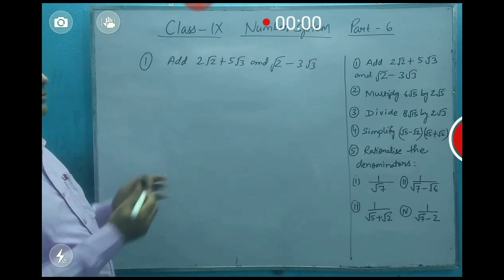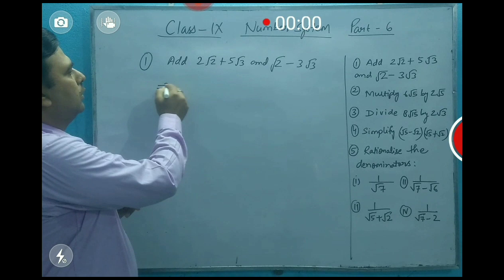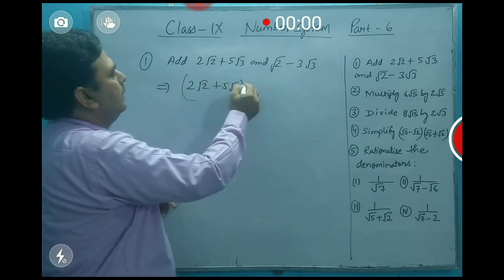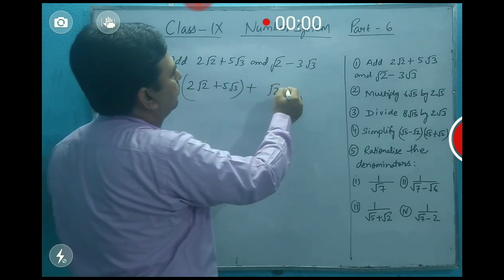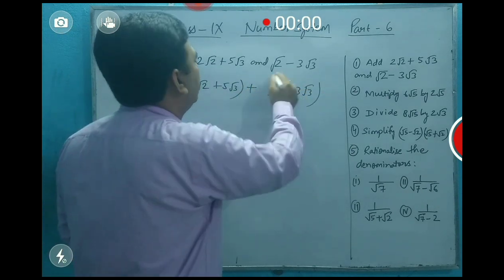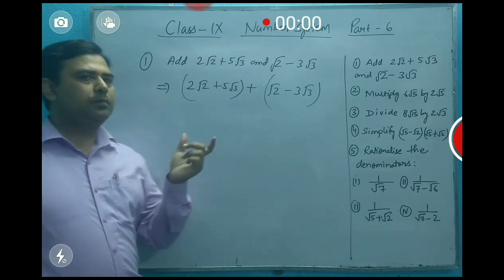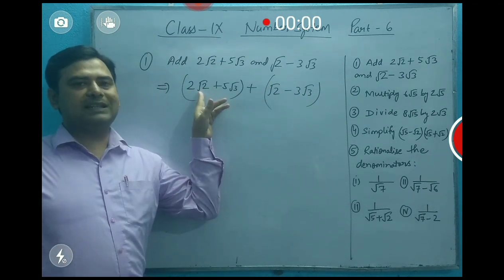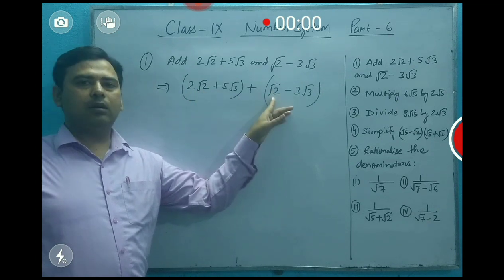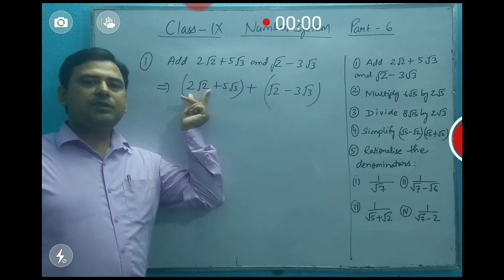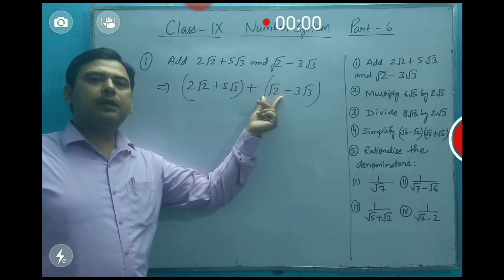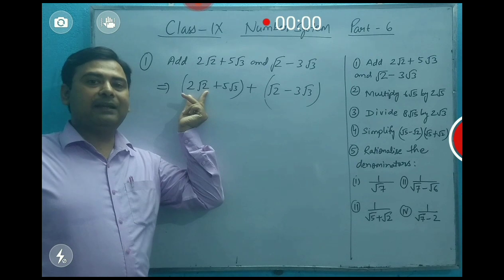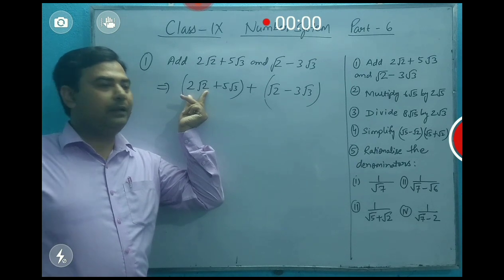For addition, first write with the addition symbol: 2√2 + 5√3, added to √2 - 3√3. Then, see — we group the same type of irrational numbers. √2 is an irrational number, and here we have √2 again — the same type of irrational numbers can be added together.